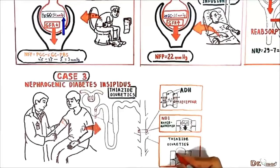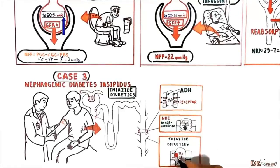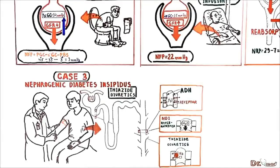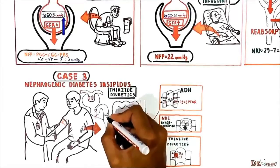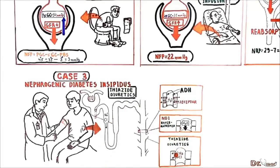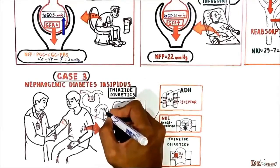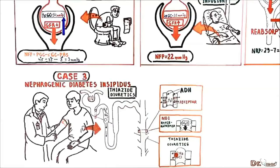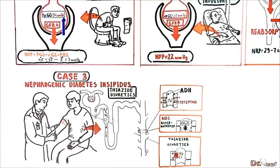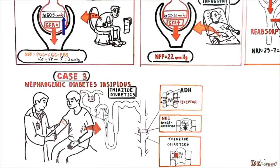The thiazide diuretics inhibit sodium chloride transporters in distal convoluted tubule, which in turn results in decreasing reabsorption of sodium and chloride and water in distal convoluted tubule. More sodium and chloride go beyond the distal convoluted tubule and water of course also follows them.